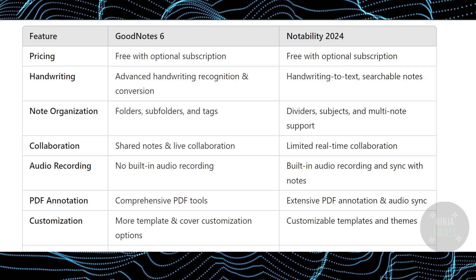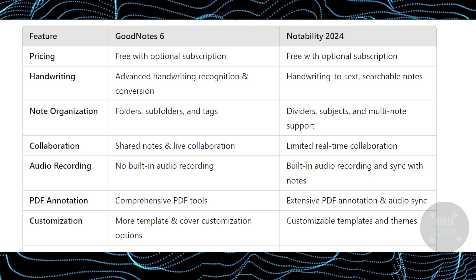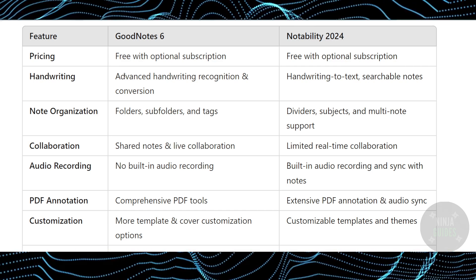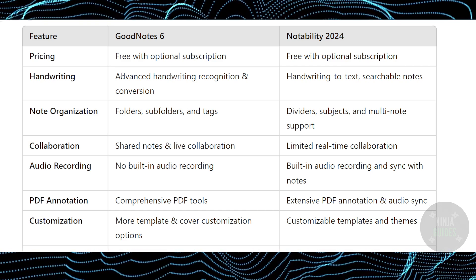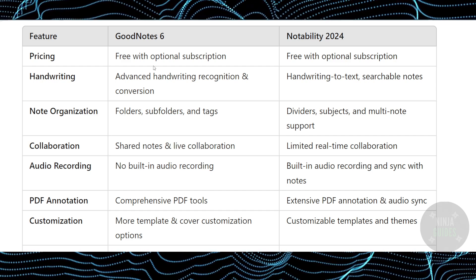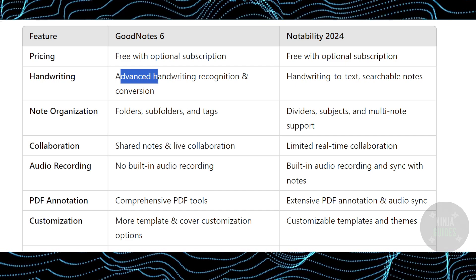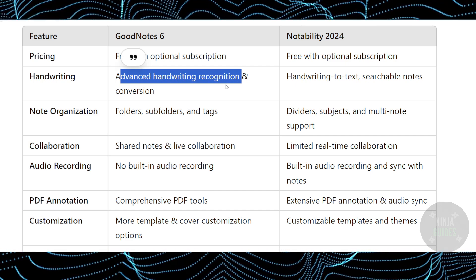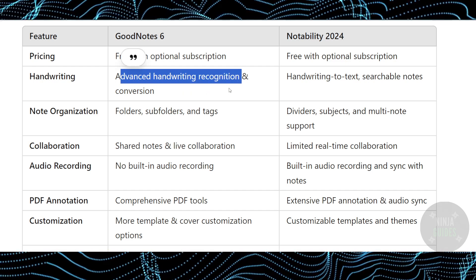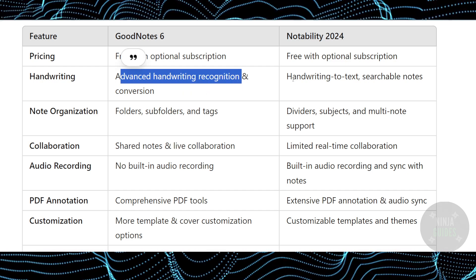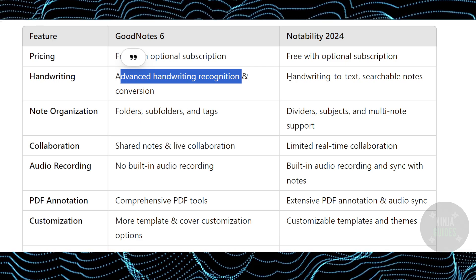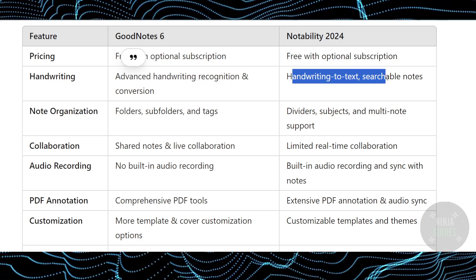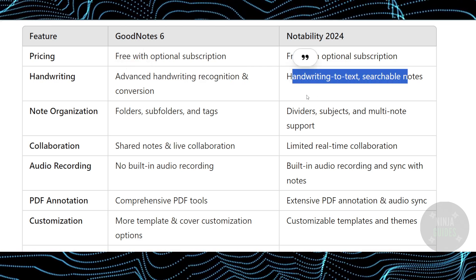Both are free with optional subscriptions. For handwriting, GoodNotes 6 gives you advanced handwriting recognition and conversion, while Notability gives you handwriting-to-text and searchable notes.